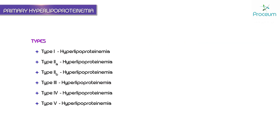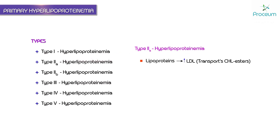In type 2a hyperlipoproteinemia, the lipoprotein which is increased is LDL — low density lipoprotein. LDL mainly transports cholesterol esters and has no effect on triglycerides. So the lipids elevated in type 2a are cholesterol esters, whereas triglycerides are normal.